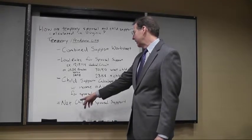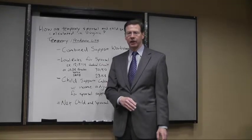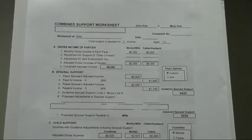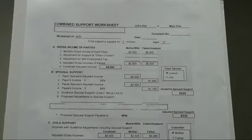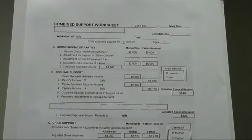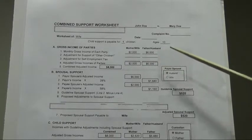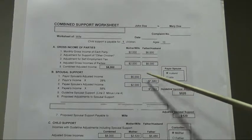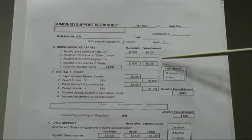The net result of all this is a net child and spousal support amount to be paid by one parent to another. This is an example of the combined support worksheet that might be used in a hearing to determine temporary spousal support and temporary child support. In this hypothetical case — John Doe versus Mary Doe — there is one child who is 10 years old. The mother makes $2,000 a month and the father makes $6,000 a month, with neither party having any adjustments for other children or other adjustments to their gross income.